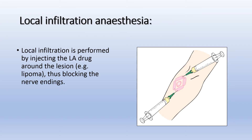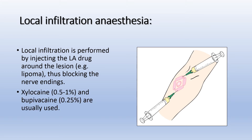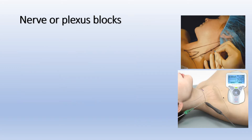EMLA cream is used for venepuncture in children, skin biopsy, arterial puncture, and circumcision. Local infiltration anesthesia is performed by injecting local anesthetic drug around the lesion — for example, a lipoma — blocking the nerve endings. We infiltrate the anesthetic drug around the lesion we are going to operate upon. Xylocaine and bupivacaine are usually used.